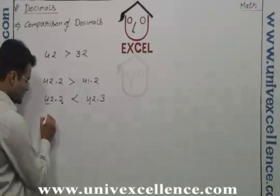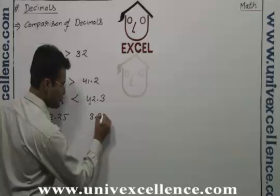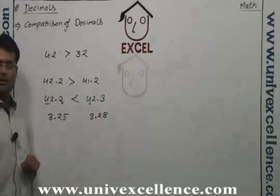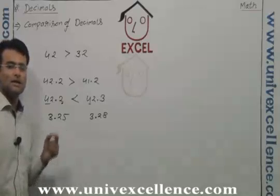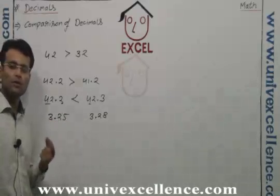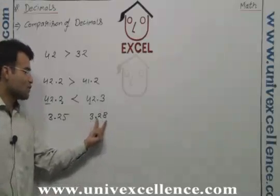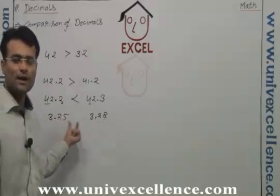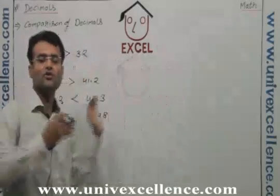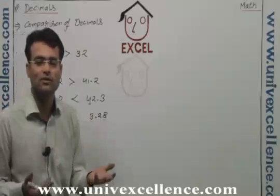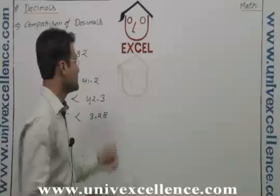If you have 3.25 and 3.28, you see before the decimal: 3 and 3, both are equal. Go after the decimal — at the tenths place there is 2 and there is 2, again equal. We go to the hundredths place: there is 5 and there is 8. So these are 25 parts of 100 and those are 28 parts of 100. 28 parts out of 100 is greater than 25 parts out of 100, so 3.28 is the larger one.